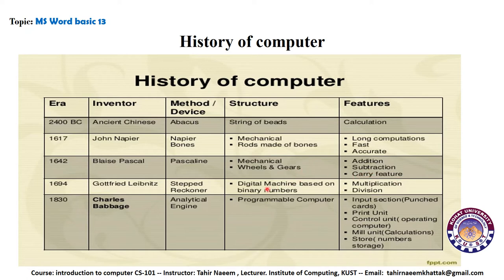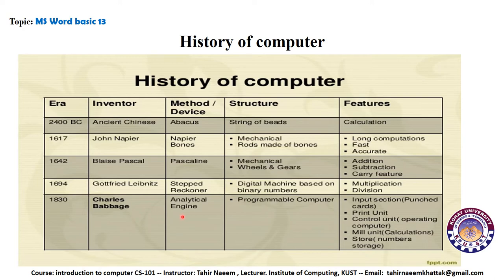Leibniz introduced the Stepped Reckoner in 1694. Its structure consisted of a digital machine based on binary numbers — this was the first machine to use binary numbers. It was also able to multiply and divide numbers in addition to addition and subtraction.